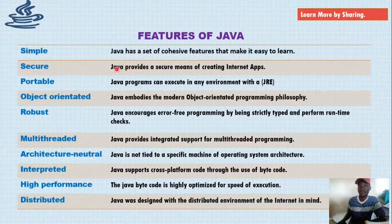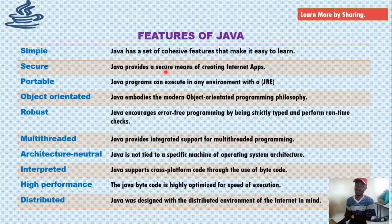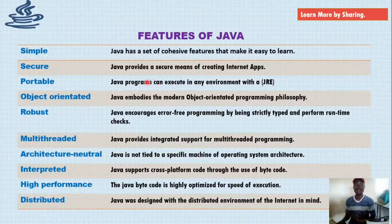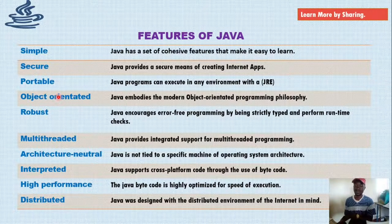Java provides a secure means of creating internet applications. It's portable, meaning Java can execute in any environment with a Java runtime — as long as you have installed Java on your machine, you can run a program written in Java. It's object-oriented, a feature inherited from C++, and it embodies the object-oriented programming philosophy.